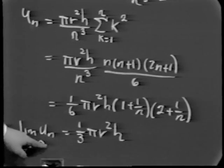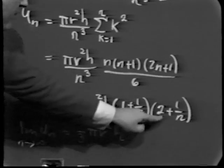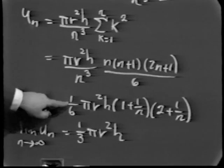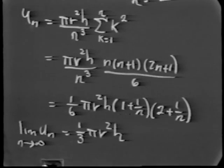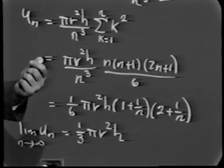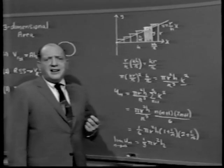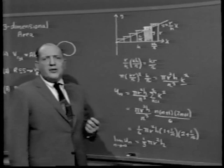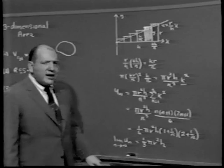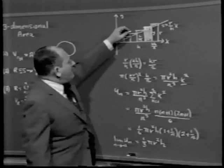Taking the limit of u sub n as n goes to infinity: the factor (1 + 1/n) approaches 1 and (2 + 1/n) approaches 2, so the entire product approaches one-third pi r squared h — the familiar result from solid geometry. What we've proven here is that the limit of u sub n as n approaches infinity is one-third pi r squared h. The question remains: how do you know the upper approximation gets arbitrarily close to the correct answer as divisions get small?